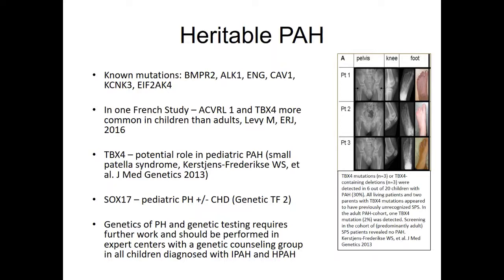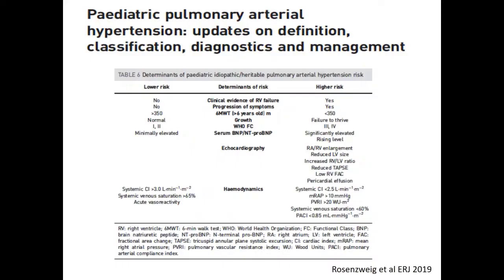Another interesting recently published gene is SOX17, which is relevant not only as an idiopathic pediatric PH form but also appears to have some relation with congenital heart disease-associated pulmonary hypertension. There is clearly a lot of work to be done, but papers on genetics of PH are coming out regularly, making this a very interesting field to follow.